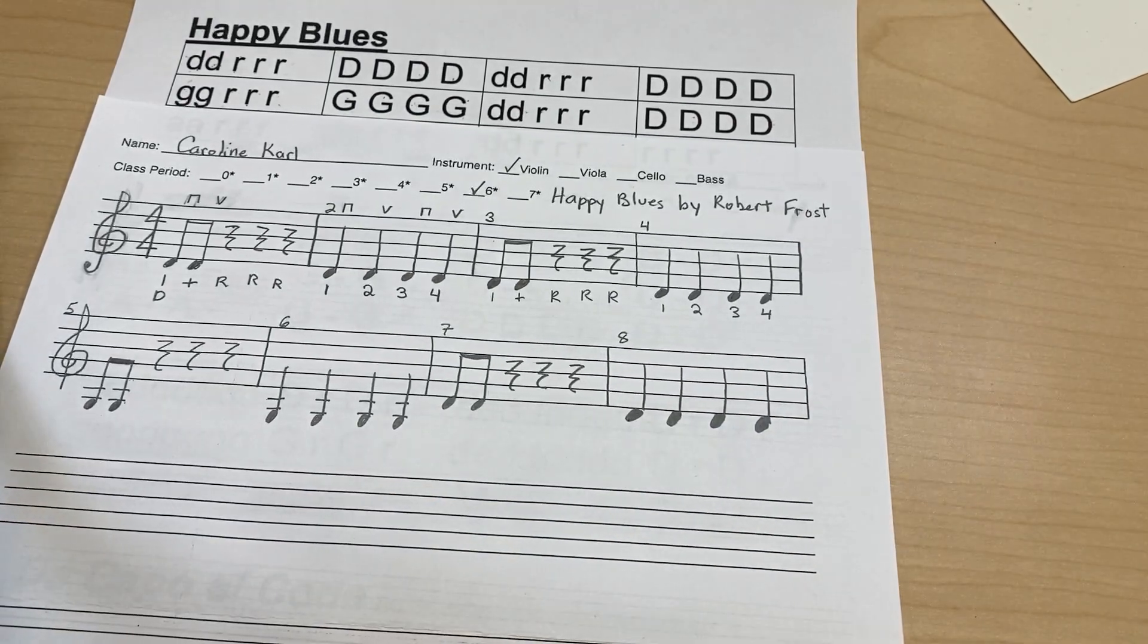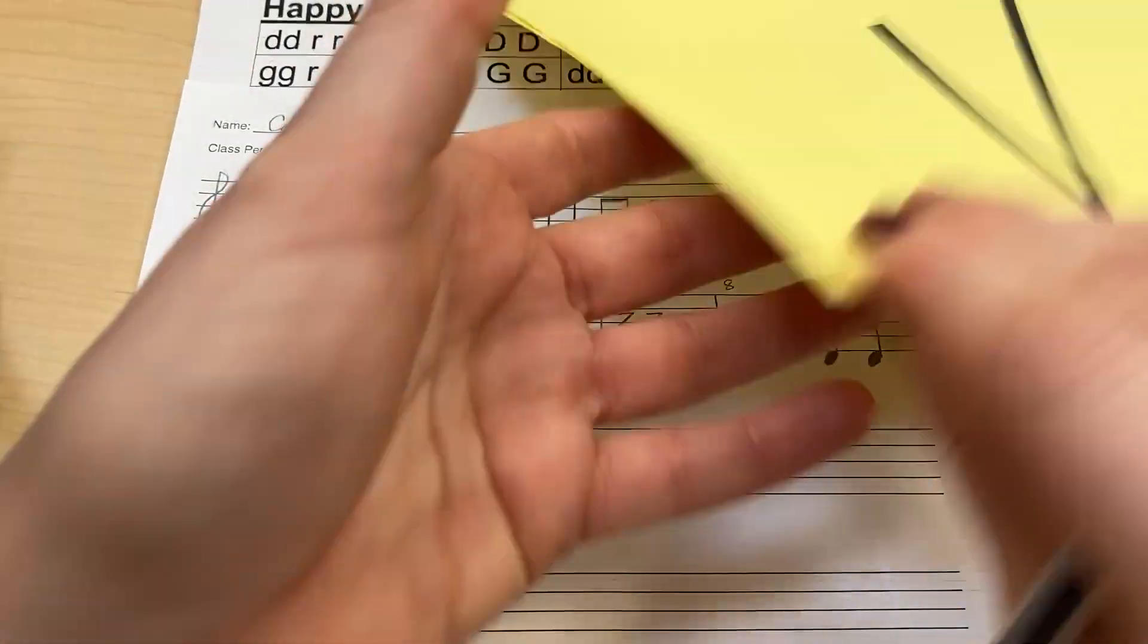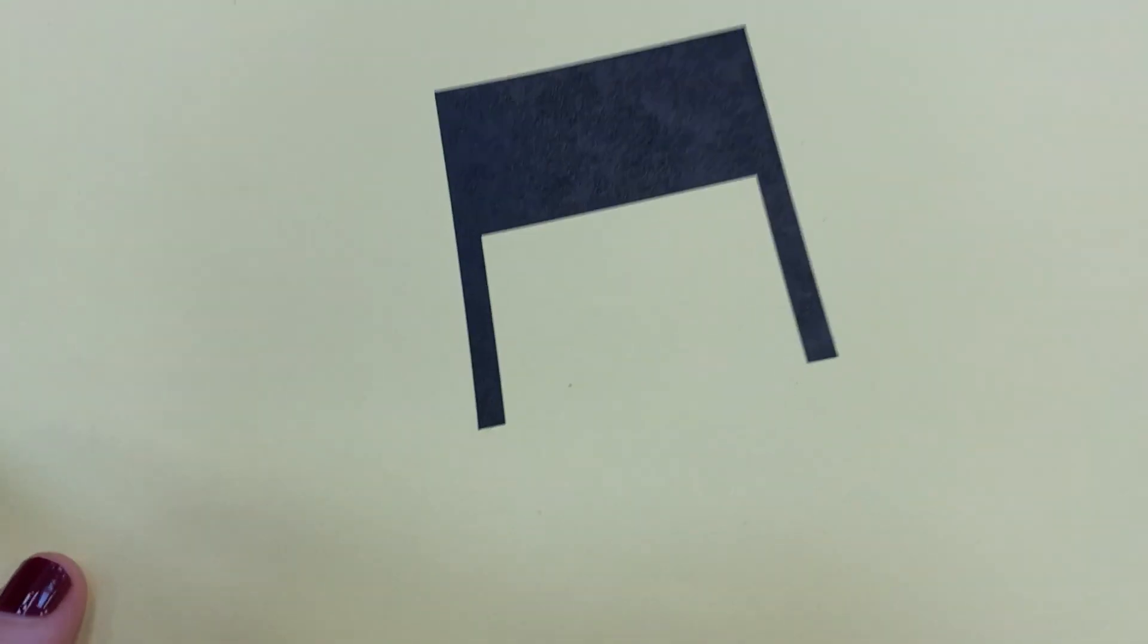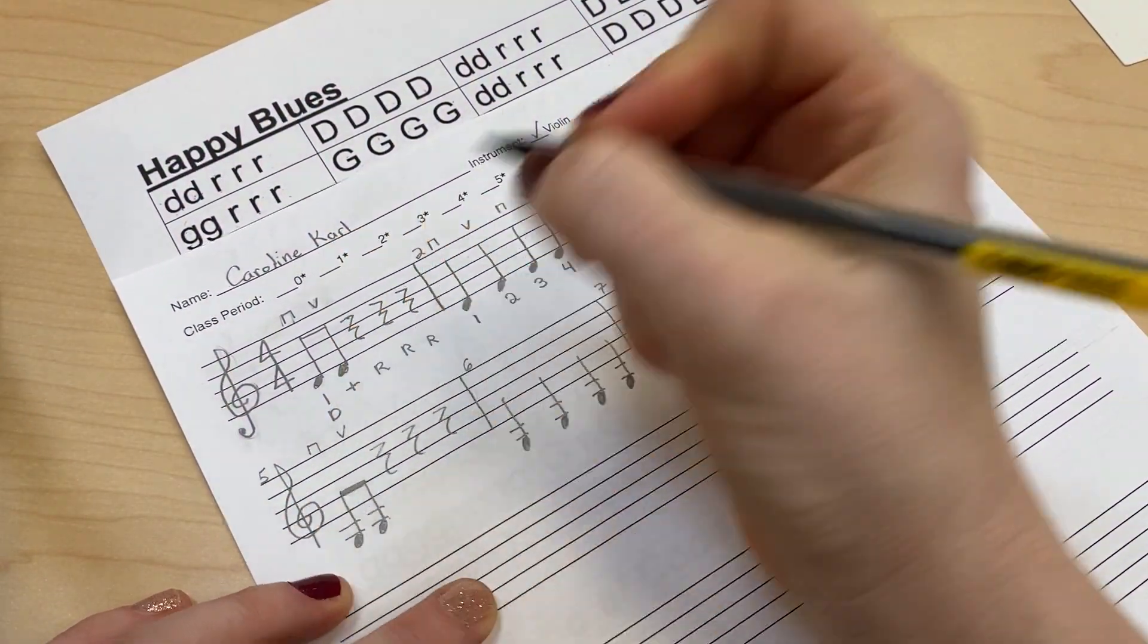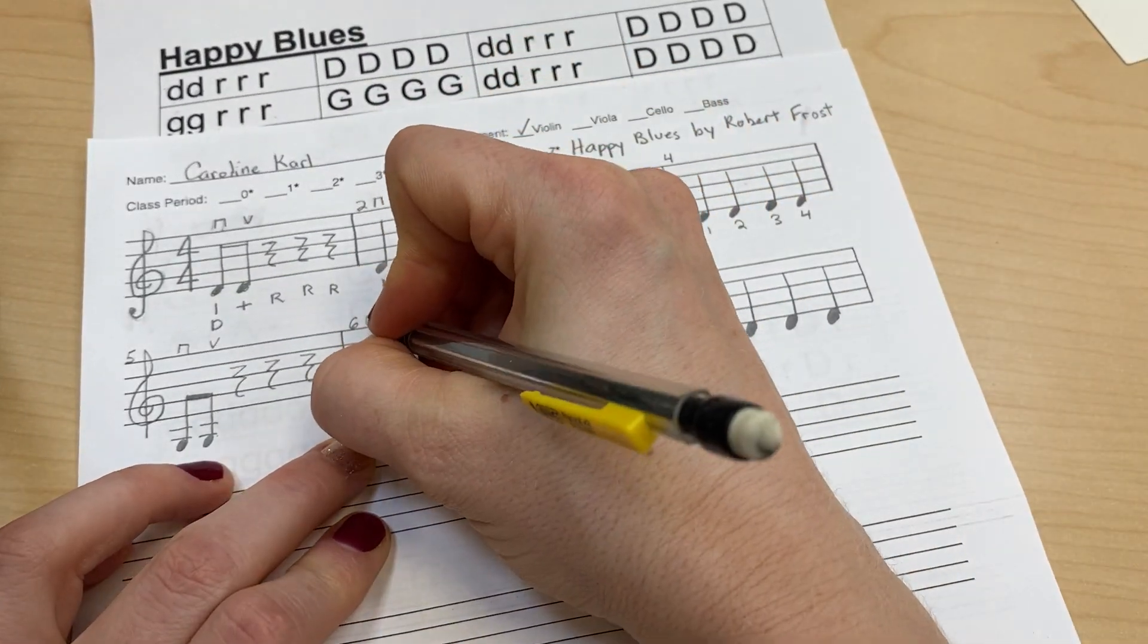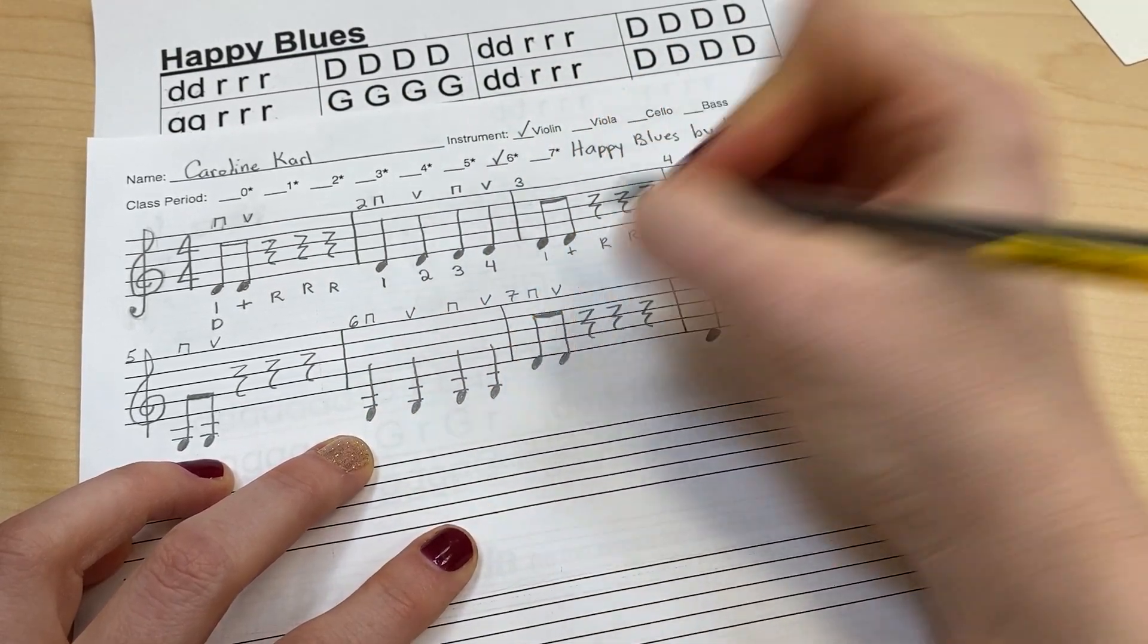Now I've got all my line two done. Now I'm going to put in my bows, bow markings. So I'm going to put in my up bows and my down bows. I'm going to start here. I'm going to do down and up. And after the rest, down, up, down, up, down, up.